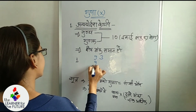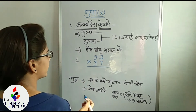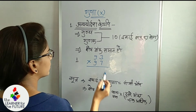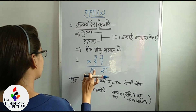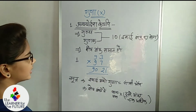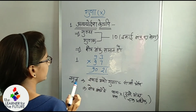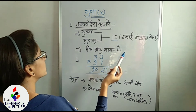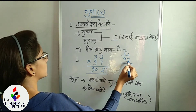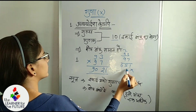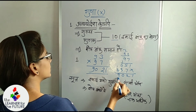For example: 93 and 97. Again, we apply this formula. The unit digits 3 and 7 sum to 10, and the remaining digits are both 9. So 3 into 7 is 21, and 9 into 10 is 90. The answer is 9021. We can verify this comparison confirms the formula works correctly in all cases.